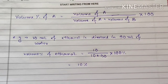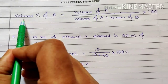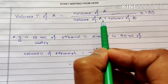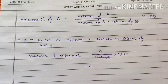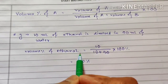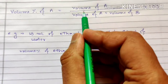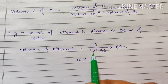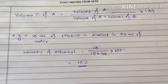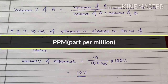Similarly, volume percentage of A equals the volume of A divided by the total volume (volume of A plus volume of B), multiplied by 100. For example, if 10 ml of ethanol is dissolved in 90 ml of water, the volume percentage of ethanol is 10 divided by (10 + 90), giving 10%. This is how volume percentage is calculated.